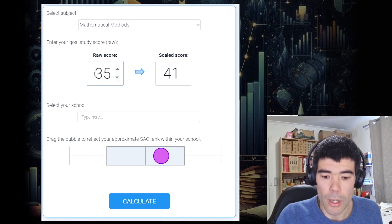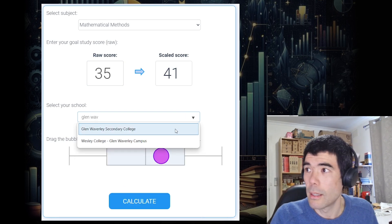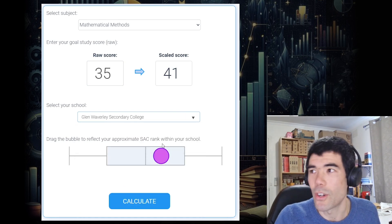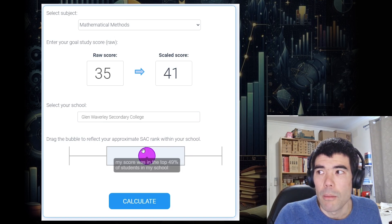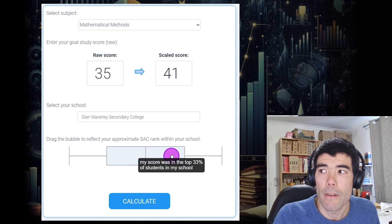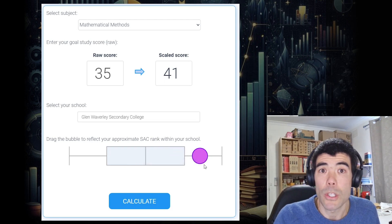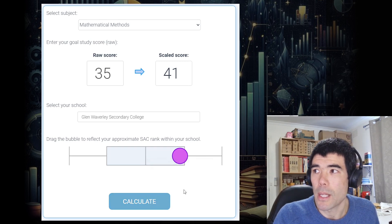Let's say I want a raw score of 35, which scales to about 41. And let's say I was at Glen Waverley Secondary College. Now, I won't know my exact SAC rank, but I'll probably know if I was around average, if I was slightly above average, or if I was well above average within the top 25%. Let's say I was just outside the top 25%.